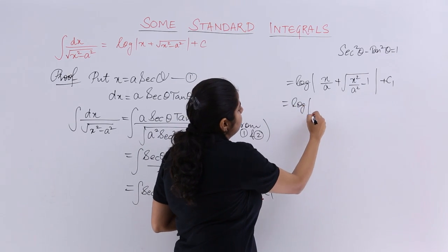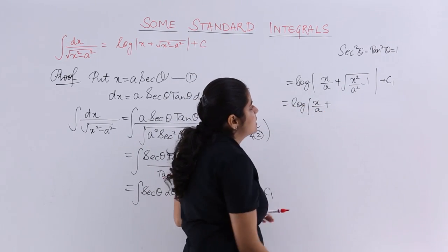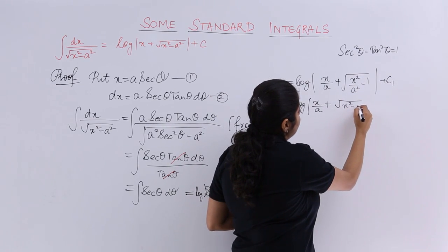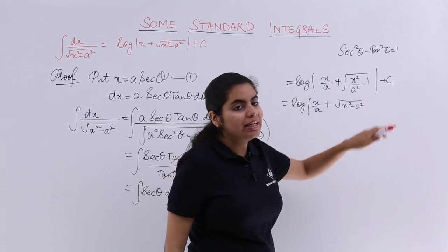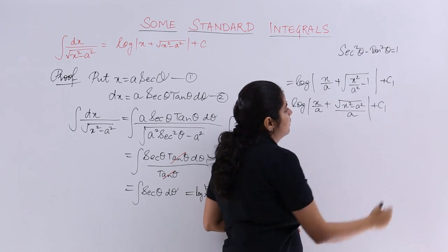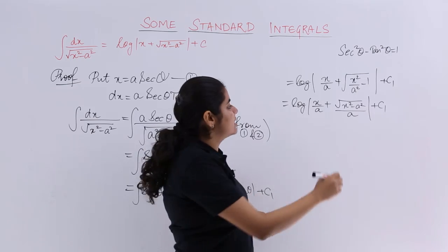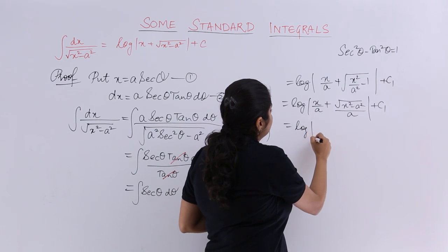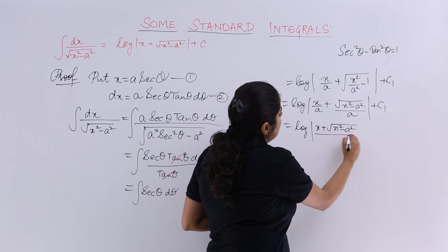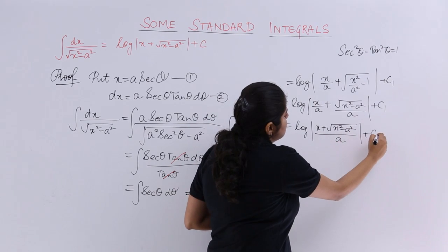Next, log x upon a plus root x square minus a square, and in the denominator it is nothing but root a square which becomes only a, plus c1. Now let's take the LCM. Taking the LCM it is log x plus under root x square minus a square upon a plus c1.